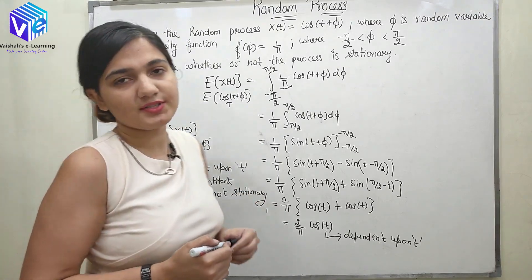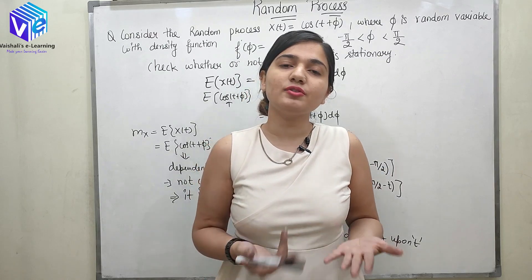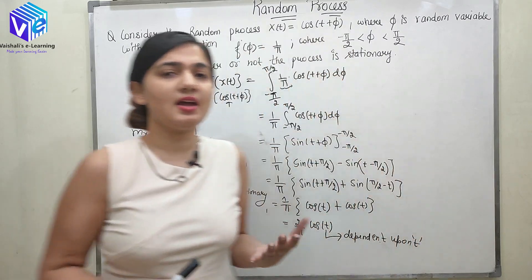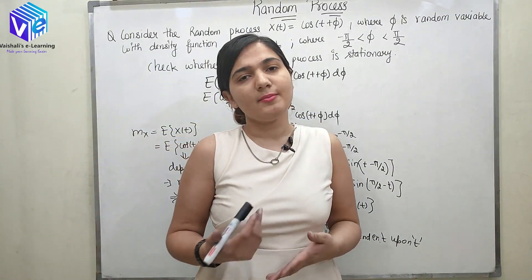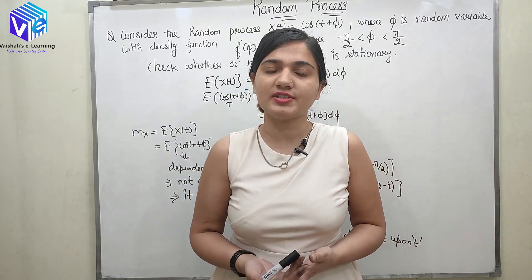Now if mean was constant, let us consider the case when mean was constant. Then we will move to the autocorrelation function. But in this question it was not required because the first condition only is not satisfied that the mean is varying. Mean is not constant. Then I can directly say the random process is not stationary.